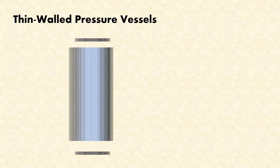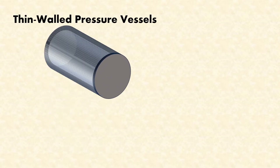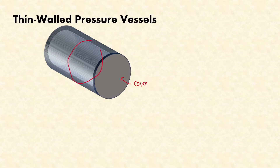Let's try to see the isometric view of our tank. In thin-walled pressure vessels, we generally have two types of stress: one that develops along the longitudinal axis due to the pressure the fluid exerts at the covers, and one that develops along the hoops. You may think of a hula hoop because our hoop stress will be along the circumference.